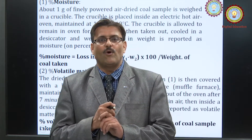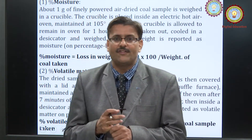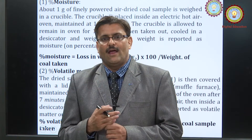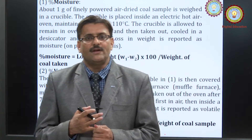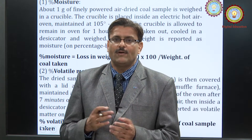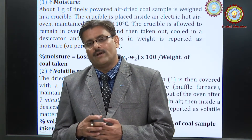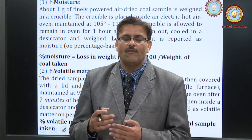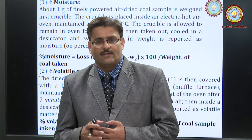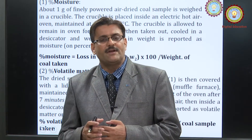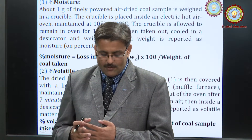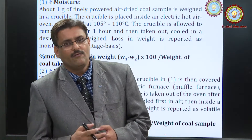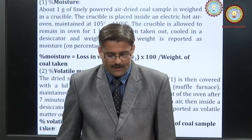For determination of moisture, a known amount of coal is taken and heated in an oven at about 105 to 110 degrees Celsius for half an hour, so that all the moisture is released in the form of water vapor. The loss in weight is estimated, and using the formula: percent moisture = (loss of weight × 100) / weight of coal taken, we can calculate the moisture content.